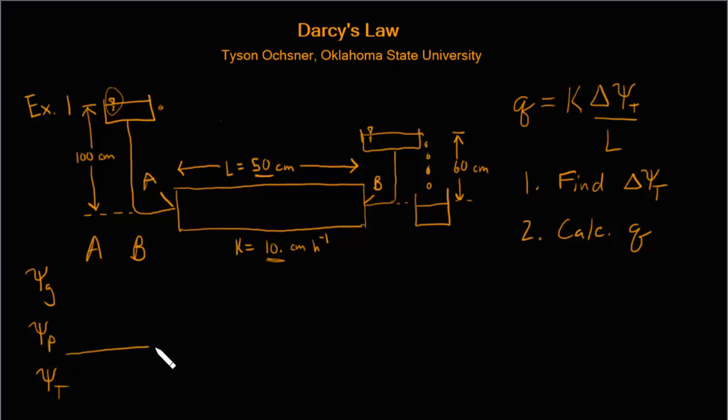And that will allow us to calculate the delta psi t that we need for Darcy's law. Now before we can calculate gravitational potential we always have to define a reference elevation. And we can choose that anywhere we want but in this case it's convenient to choose the reference elevation as the center line of the column. Because then both points A and B are at the reference elevation so they have a gravitational potential of 0 cm. That's convenient.